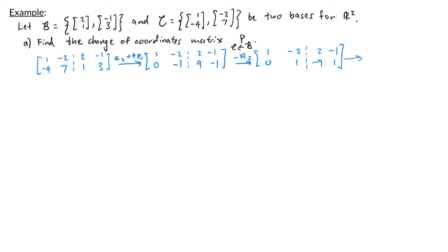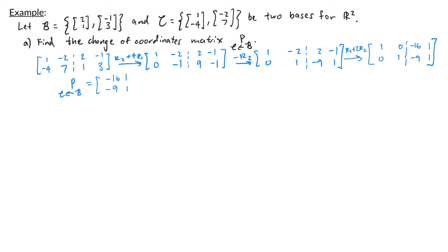Lastly, do row 1 plus 2*row 2, which gives [1, 0, -16, 1; 0, 1, -9, 1]. Once we've row reduced this augmented matrix, the change of coordinates matrix P from B to C is just the matrix on the right: [-16, 1; -9, 1].